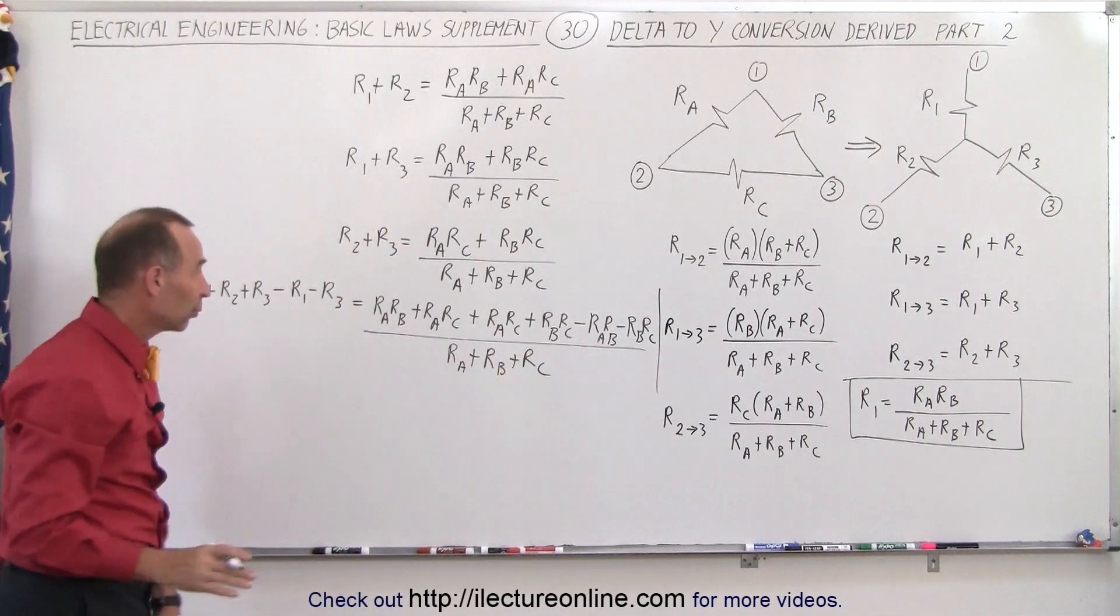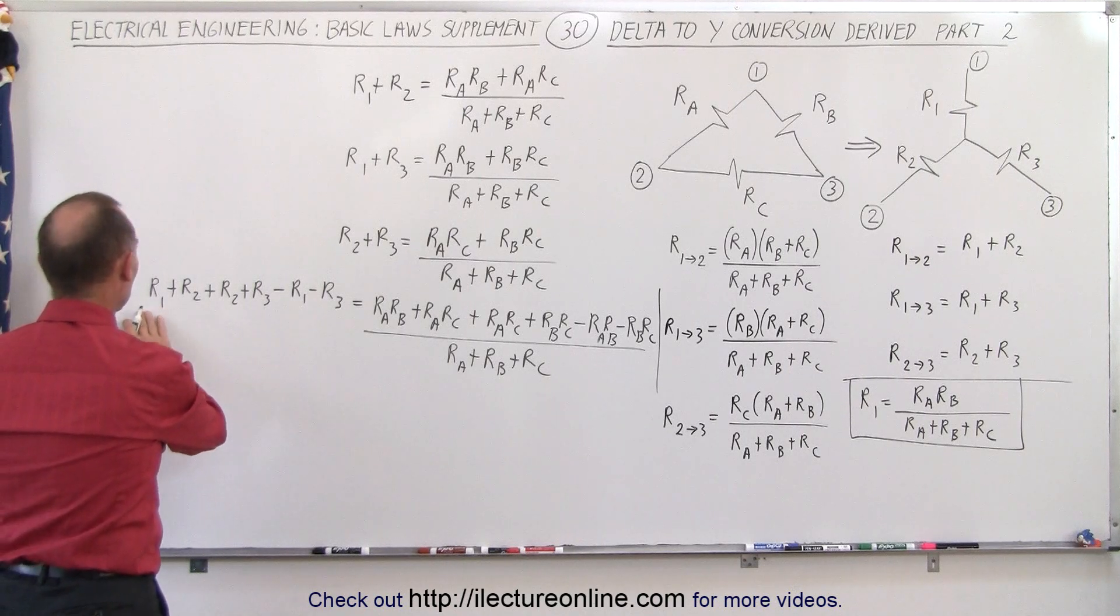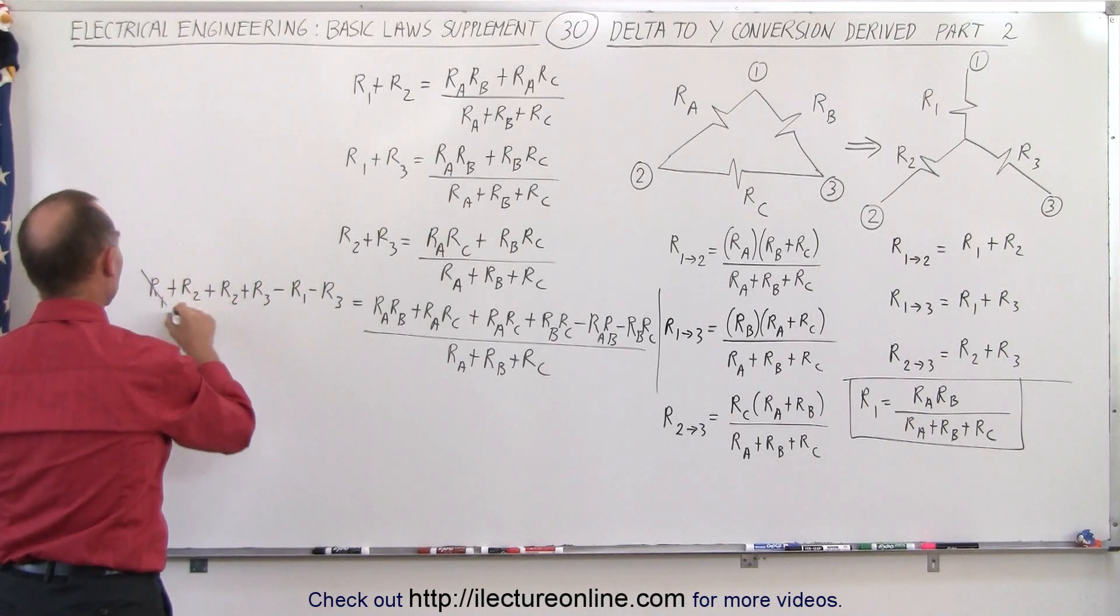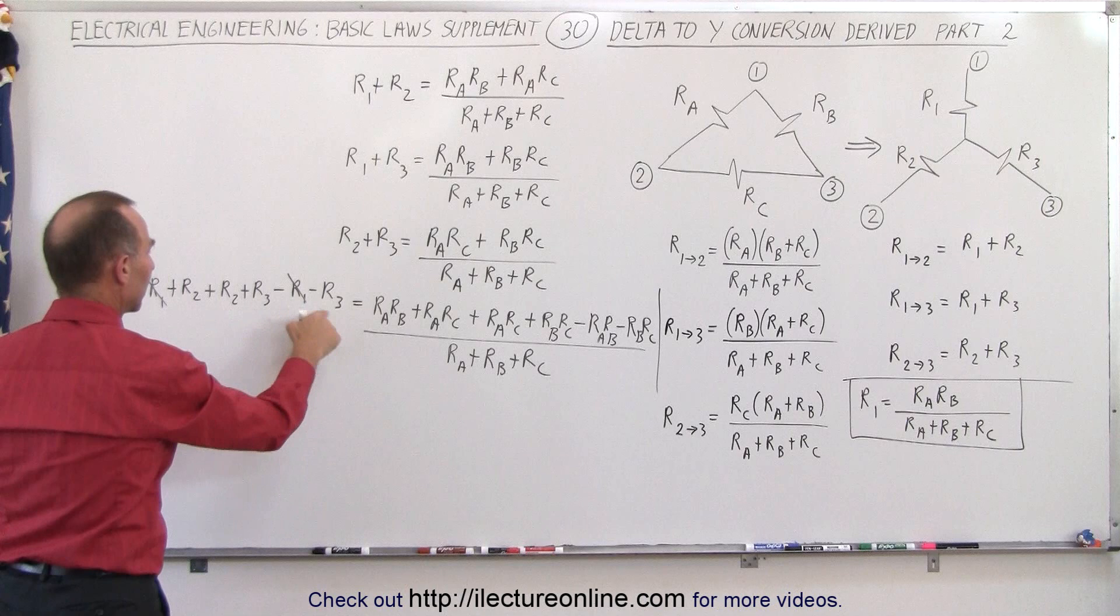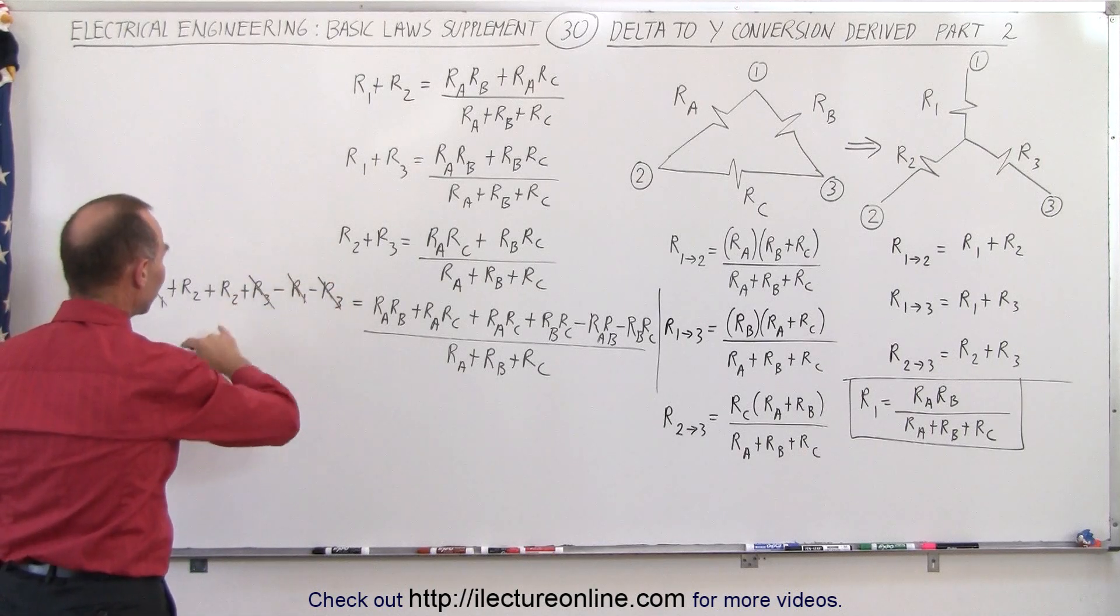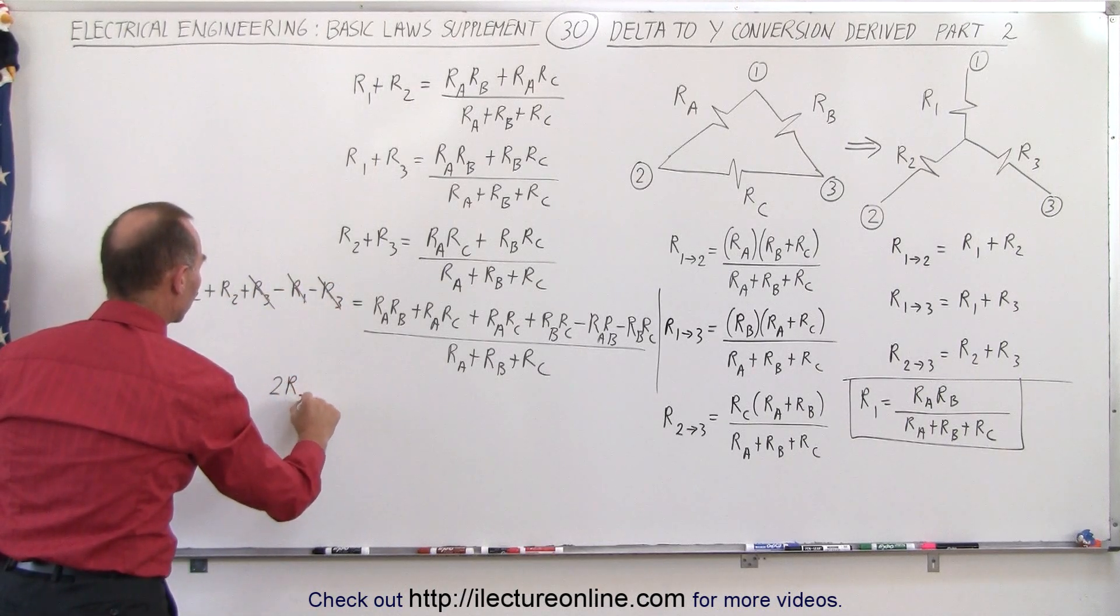So after we've done that, what do we end up on the left side? Well, we have an R1 here and a negative R1, so they cancel. And we have an R3 and a negative R3, they cancel. So on the left side you end up with 2 times R2.